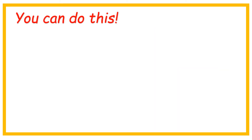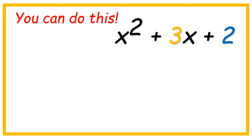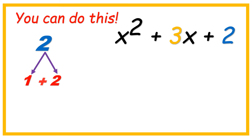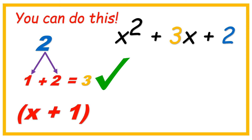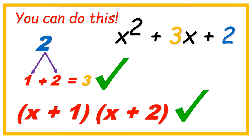You can do this. x squared plus 3x plus 2. Think of factors of 2 — I can only think of 1 times 2. And when we add 1 and 2, the answer is 3. We got it! The factors are x plus 1 and x plus 2. Just like that!